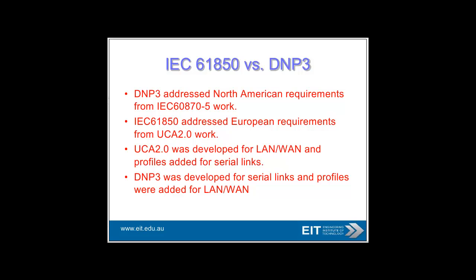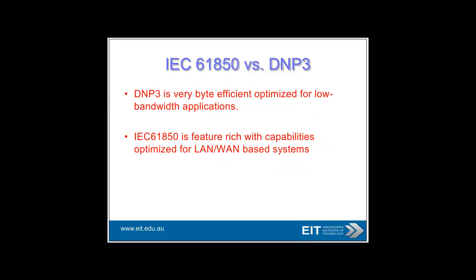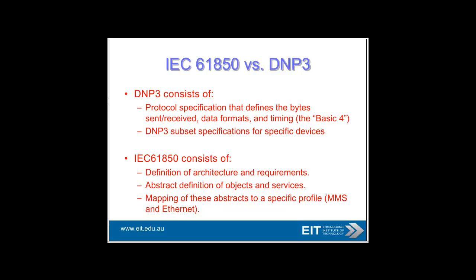There is a little bit of concern about the non-deterministic behavior of Ethernet, but that's not such a big issue with switches. You also hear about the DNP3 protocol, which is used for SCADA applications. This is a different approach from IEC 61850. DNP3 is used over low-speed links, whereas IEC 61850 is based on the high-speed LAN/WAN world where independence from the organization of storage bytes was important. DNP3 is very byte-efficient because it's often transferred over low speeds, whereas IEC 61850 is often based on Ethernet, so speed is not such a big issue.